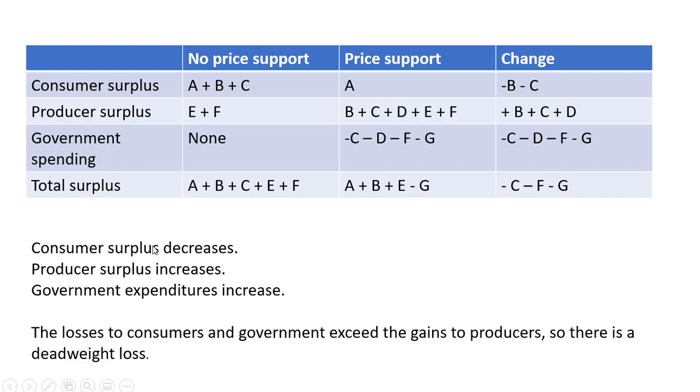Consumer surplus decreases. Producer surplus increases. Government expenditures increase. So the losses to consumers and the government exceed the gains to producers.